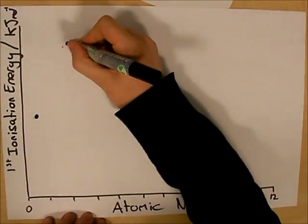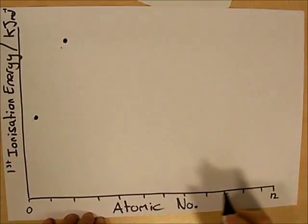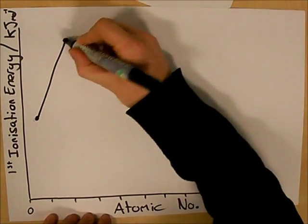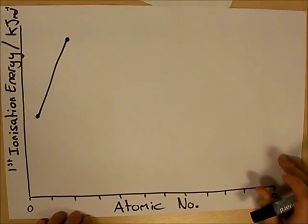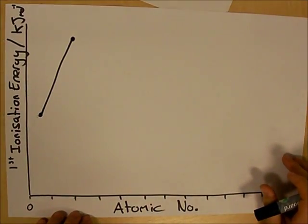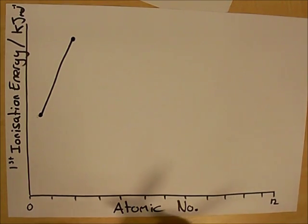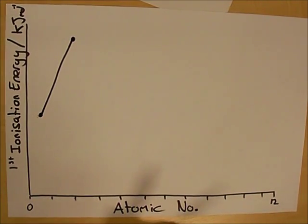The second element in the periodic table with atomic number 2 is a lot higher than hydrogen because it has an extra proton in its nucleus which gives it an increased nuclear charge. This increased nuclear charge holds the electron a lot more strongly, requiring more energy to remove an outer electron.